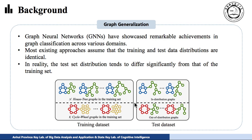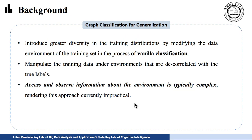Graph neural networks have shown remarkable success in graph classification across various domains. However, most existing methods assume that the training and test data distributions are i.i.d. In reality, the test distribution tends to differ from that of the training distribution.